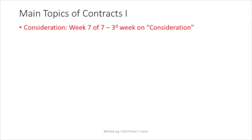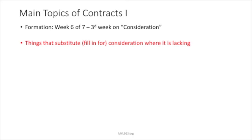We've already done offer. We've done several weeks on acceptance. This is our third week on consideration — what is consideration, what is not, adequate and sufficient, in flip-flop order. Remember, you ask the sufficiency question first, and only go to the adequacy question if it looks like it's not a contract but a gift, a bribe, something that should have belonged in a will, or something other than a contract. The following week, we cover things that are typically not consideration, like love and affection, pre-existing duties, et cetera. This week, we're going to cover what we like to call consideration substitutes.